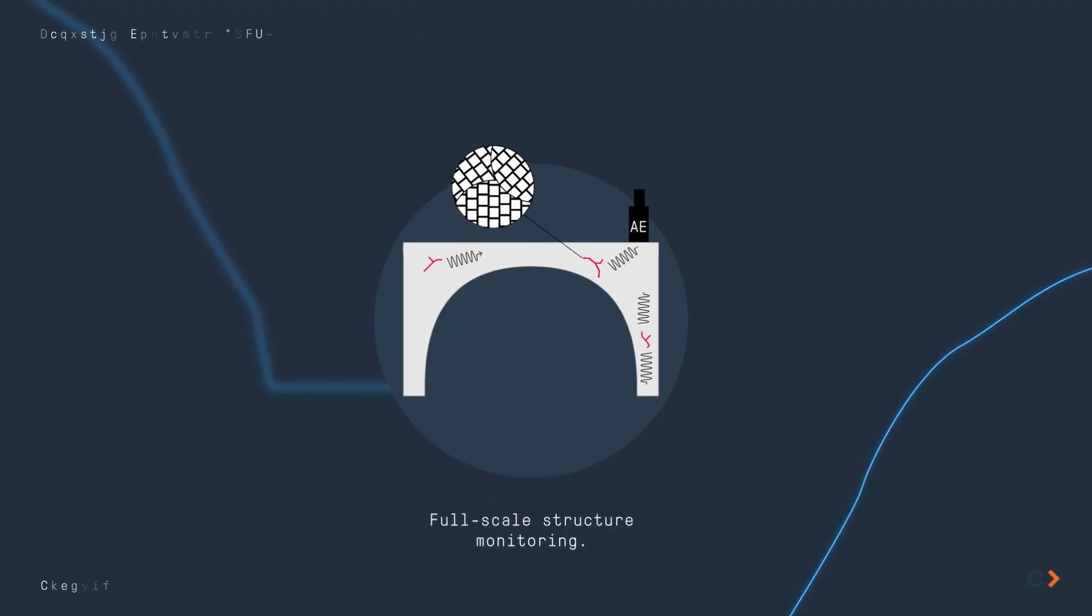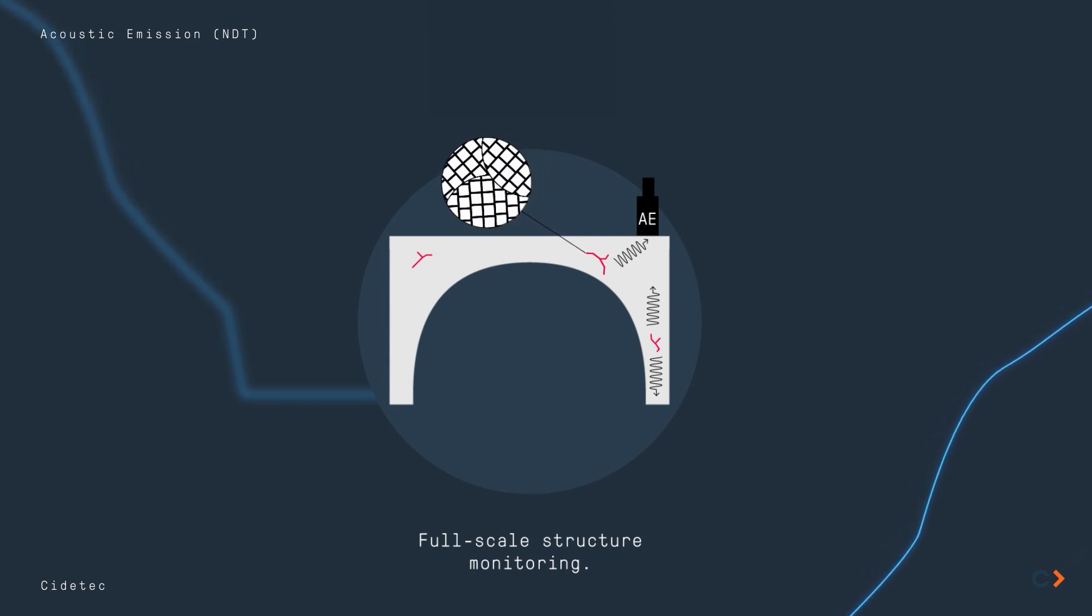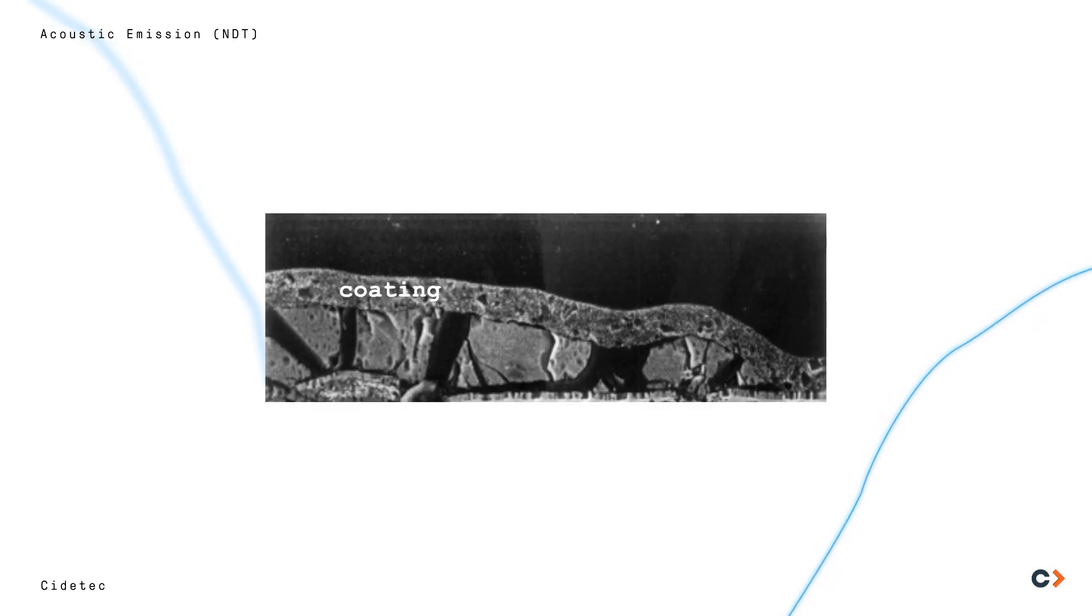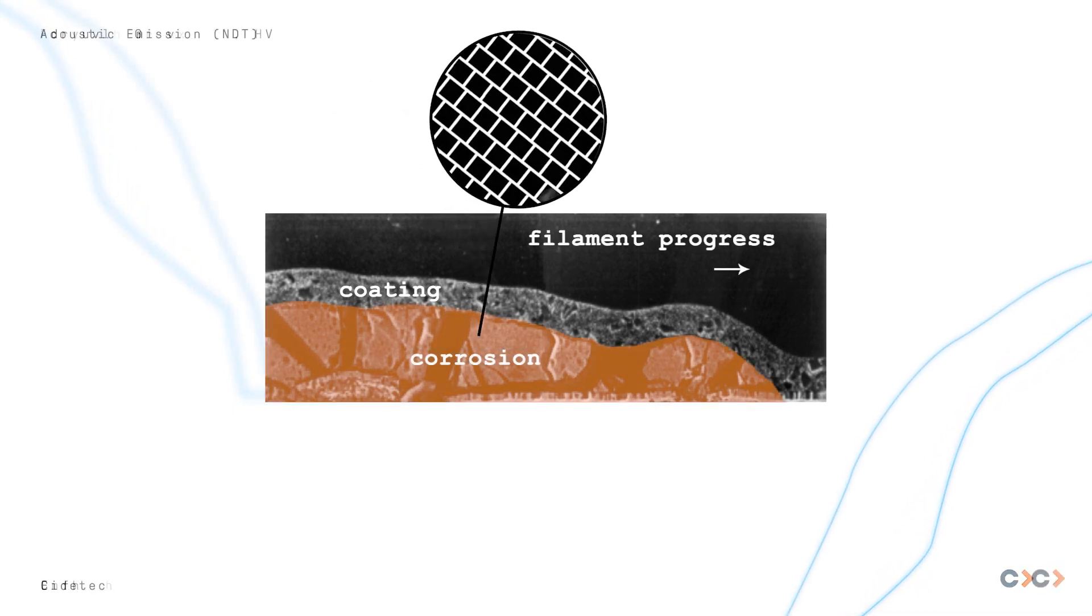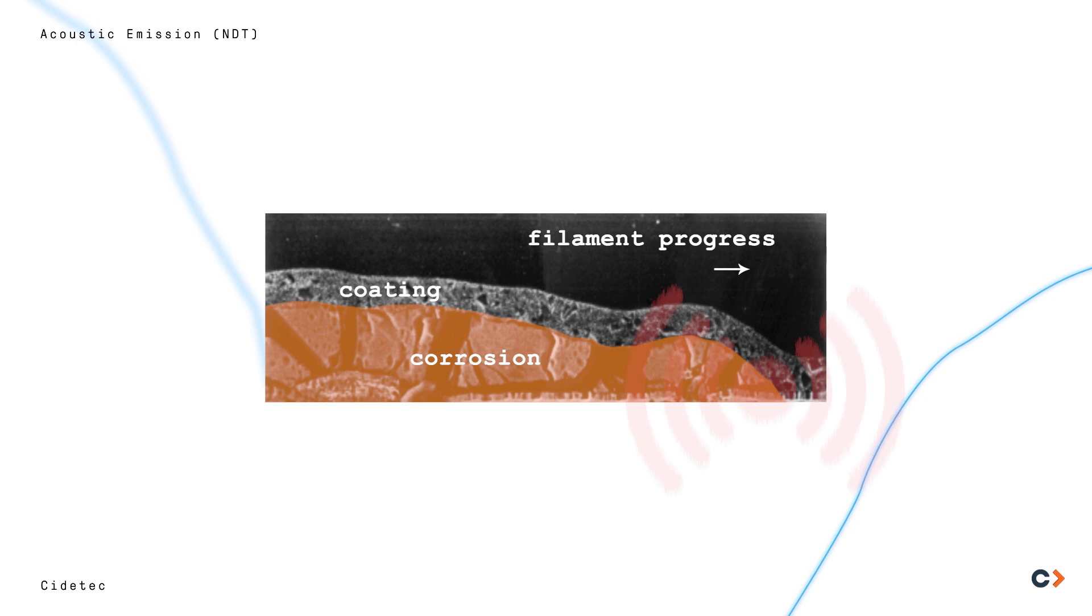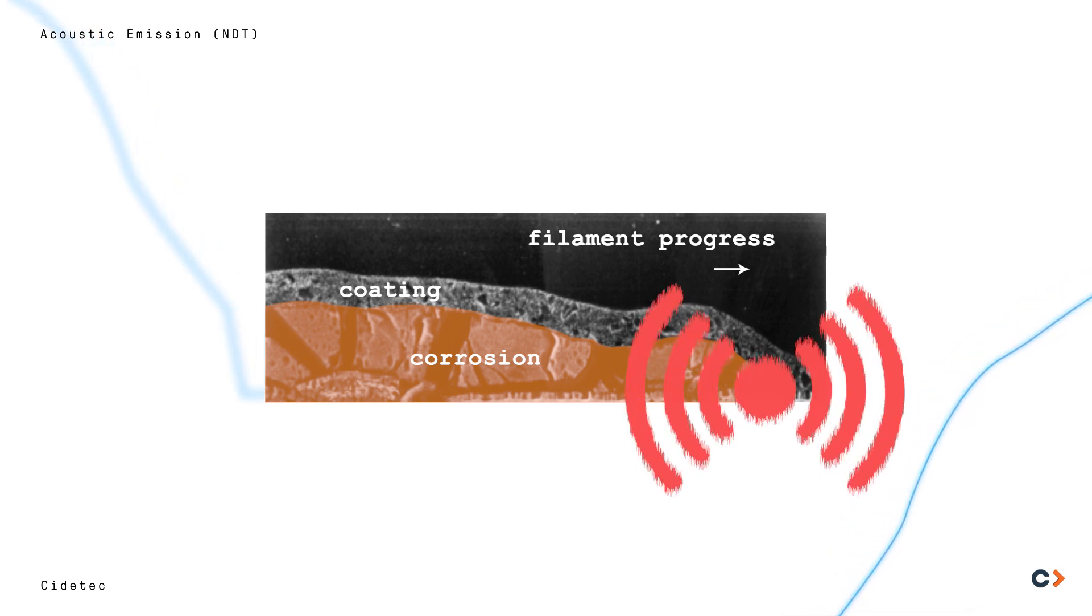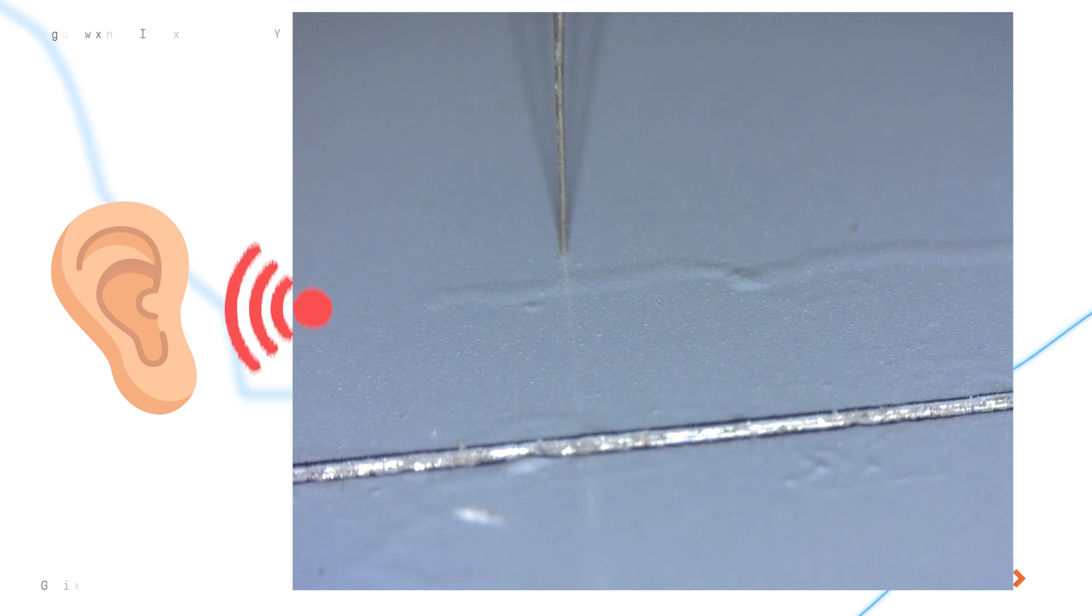Why is that so important? Well, for the case of filiform corrosion, the damage is hidden under coatings and not detected under regular inspections. However, the lamination will release acoustic waves. If we can see it, we can hear it.